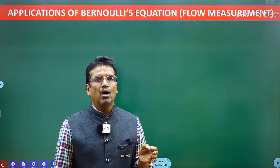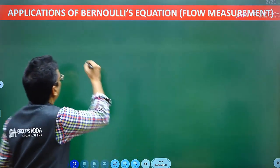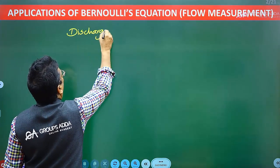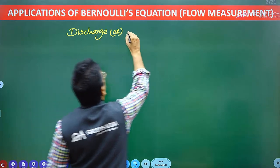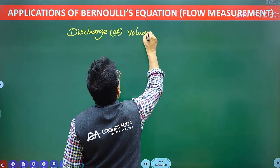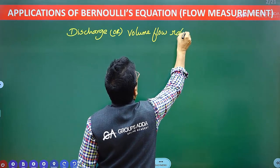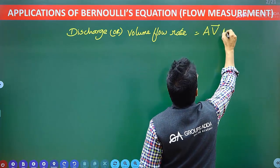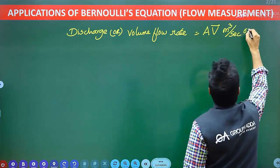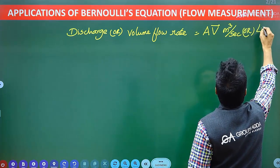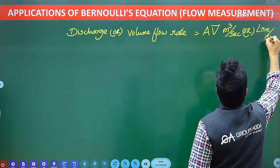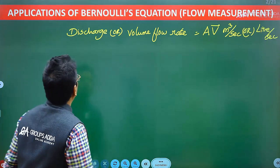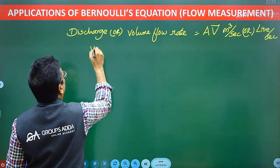One is discharge or the volume flow rate, which is given as the product of area of cross section into velocity, expressed in meter cube per second or liters per second — because 1000 liters equals 1 meter cube. The other quantity is flow rate, discharge, or velocity of flow.